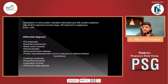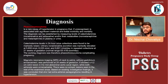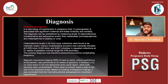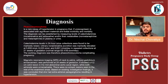Differential diagnosis included preeclampsia, essential hypertension, renal artery stenosis, and others. Further evaluation including urinary catecholamines — noradrenaline and adrenaline — led to the diagnosis of pheochromocytoma. This is a rare cause of hypertension in pregnancy; if unrecognized, it is associated with significant maternal and fetal morbidity and mortality. Urinary catecholamines in 24-hour collection were markedly raised at 5659, confirming the diagnosis of pheochromocytoma.